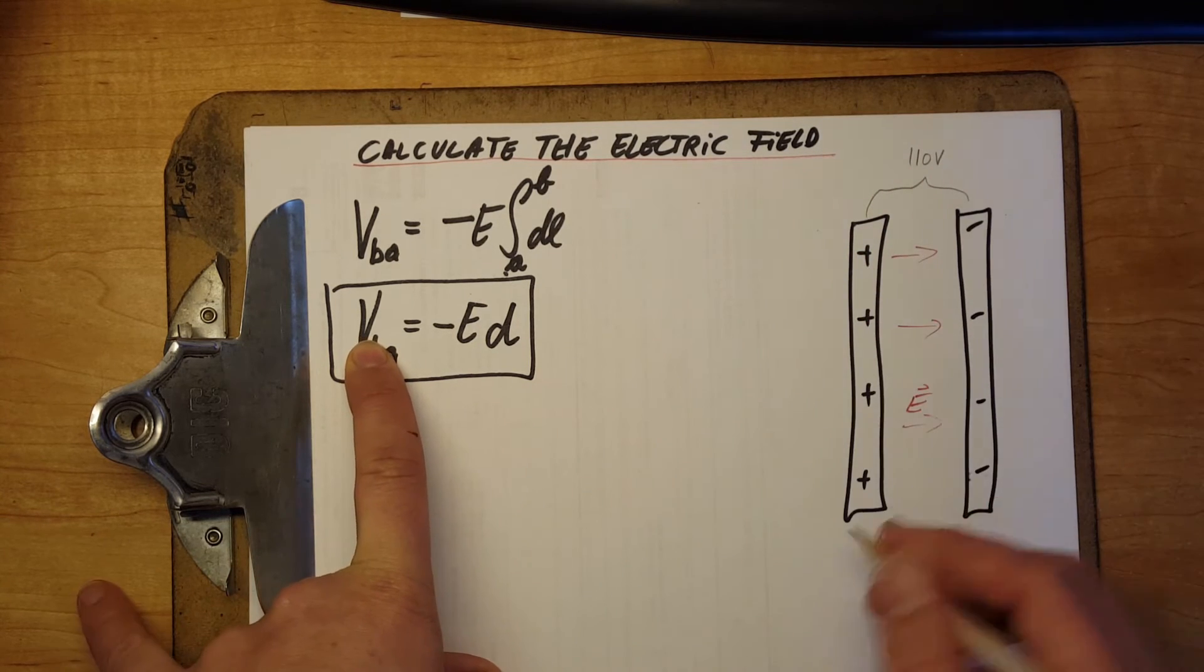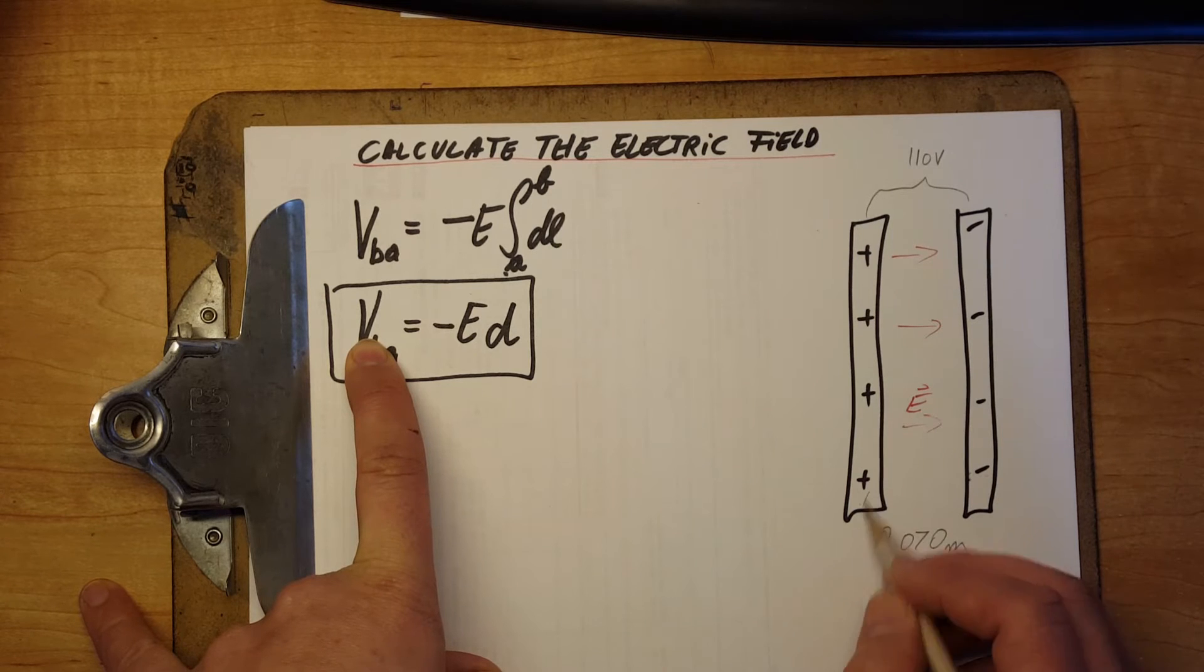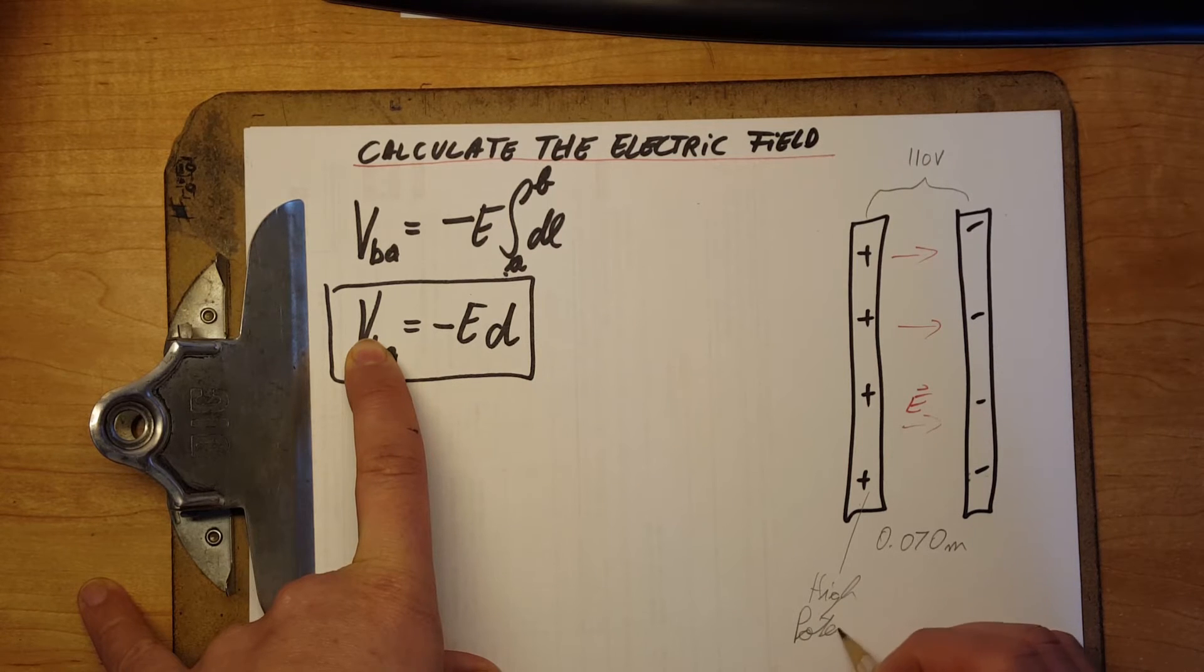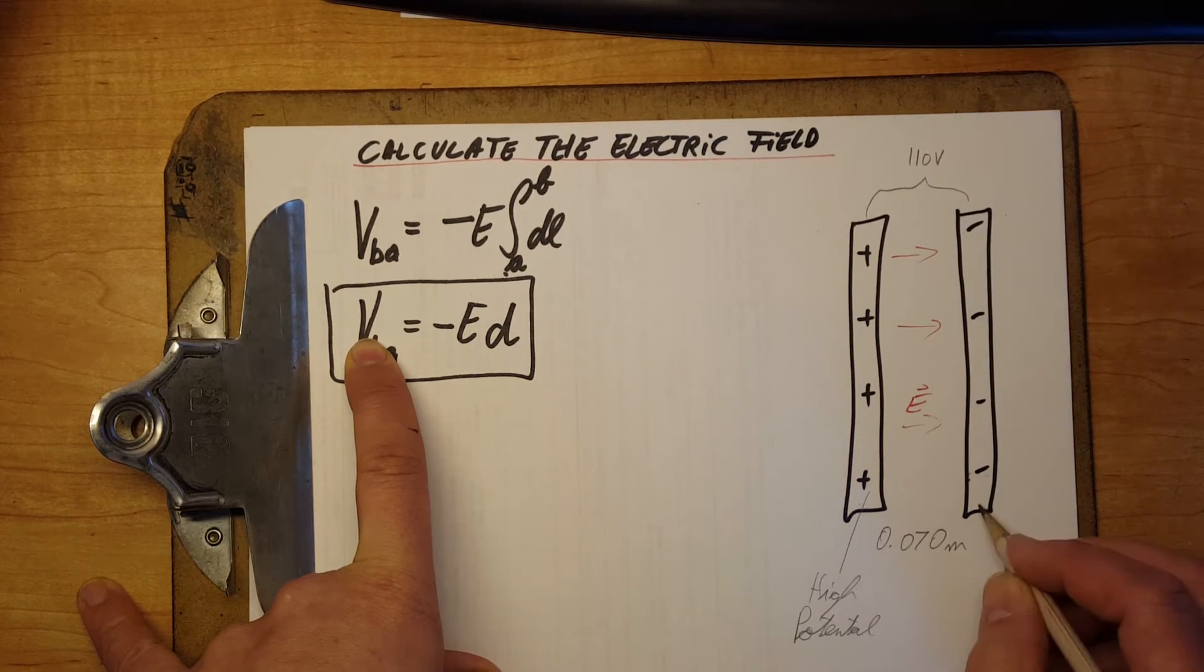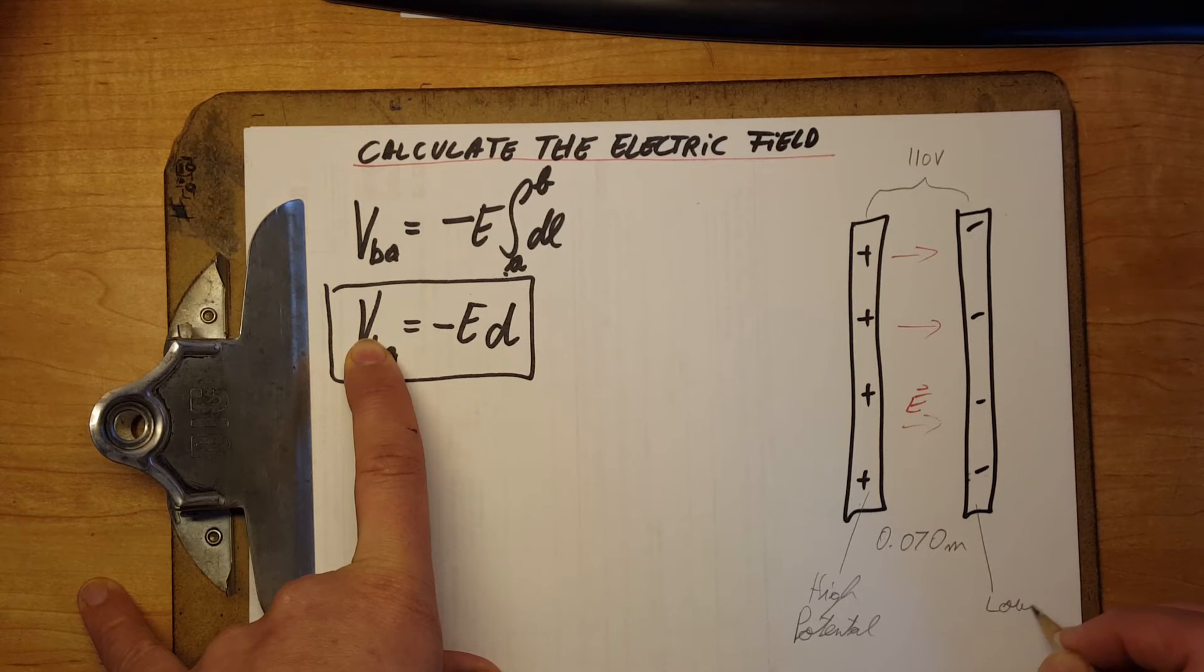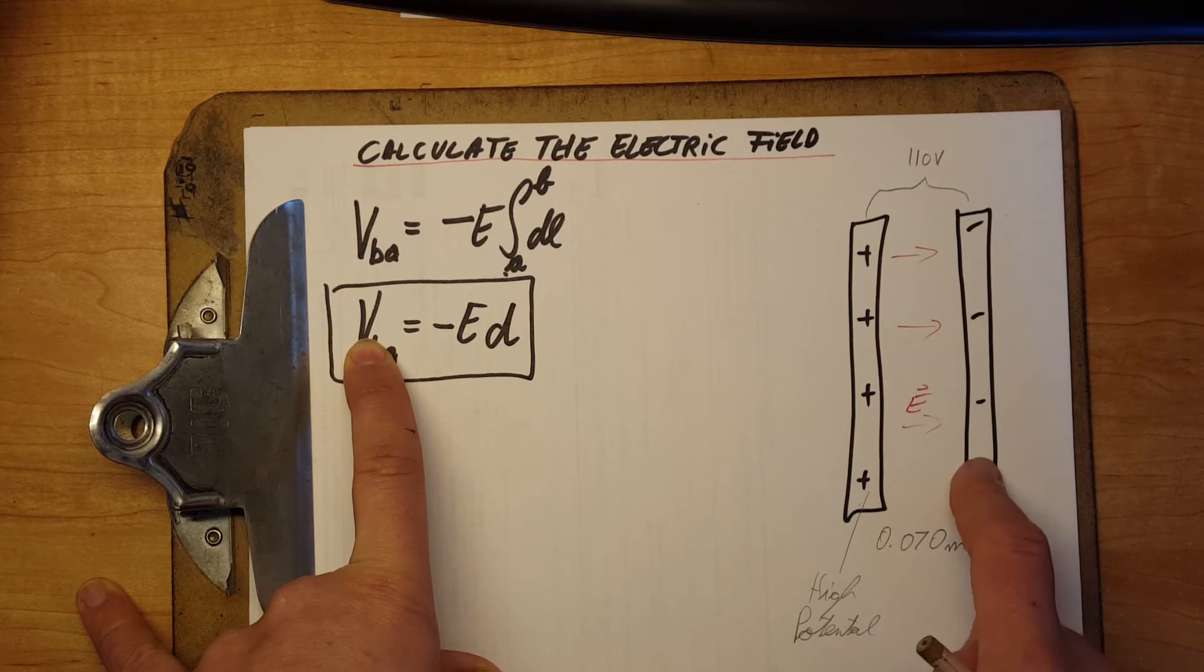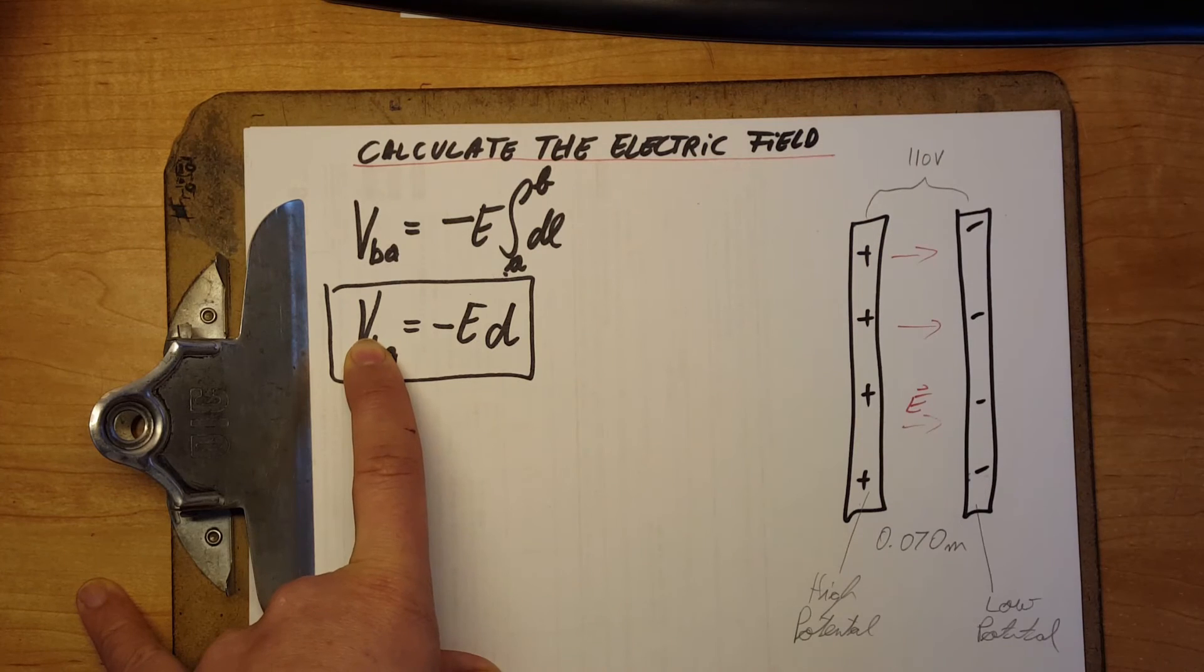Because we are going from the high voltage, high potential, to low potential. We're going from high potential to low potential. And final minus initial will give us a negative value. So, therefore, negative 110.